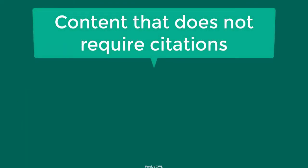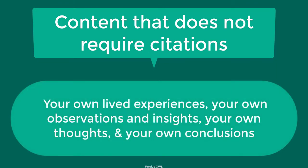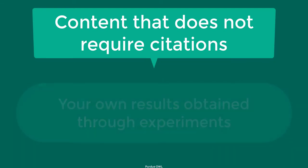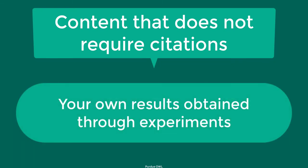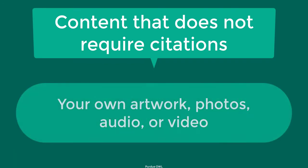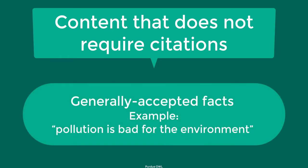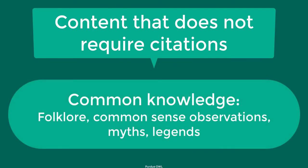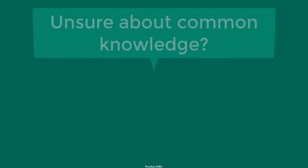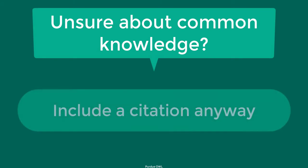There are also certain things that do not require citations. These include writing your own lived experiences, your own observations and insights, your own thoughts, and your own conclusions about a subject. Writing your own results obtained through lab or field experiments. Using your own artwork, photos, audio, or video. Using generally accepted facts, such as stating pollution is bad for the environment. And when you are using common knowledge such as folklore, common sense observations, myths, and legends. If you're not sure if something is common knowledge or not, you should use a citation anyway, even if it turns out to be unnecessary.